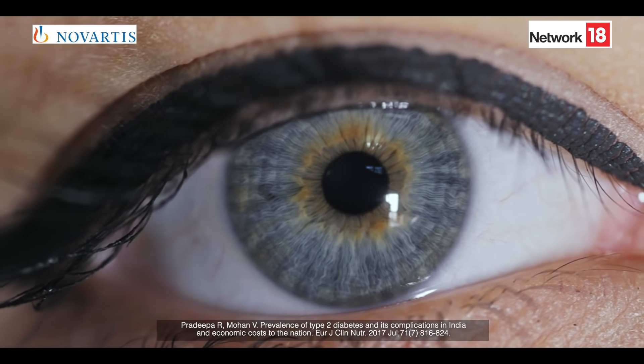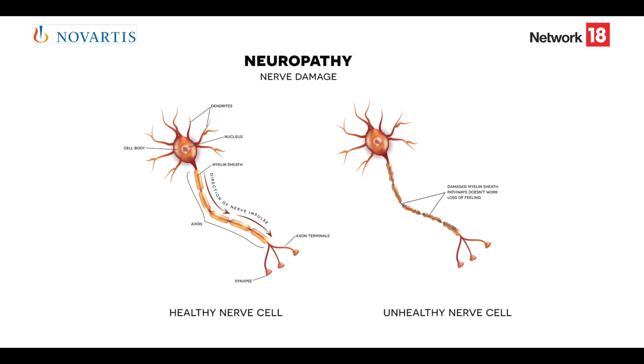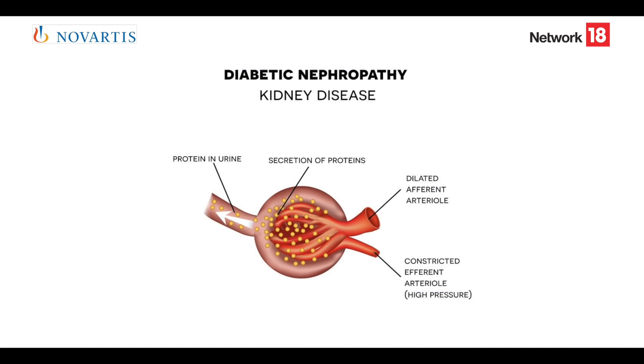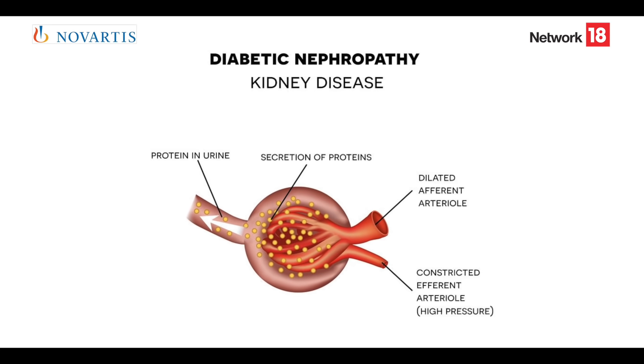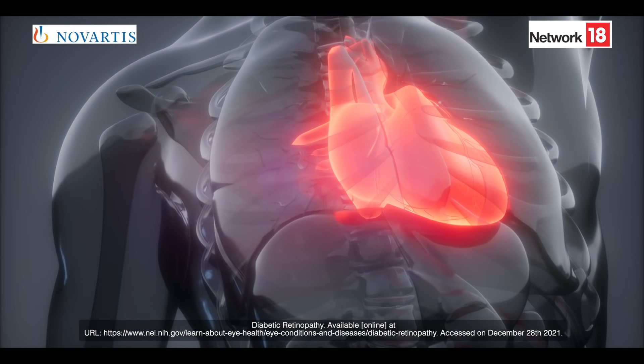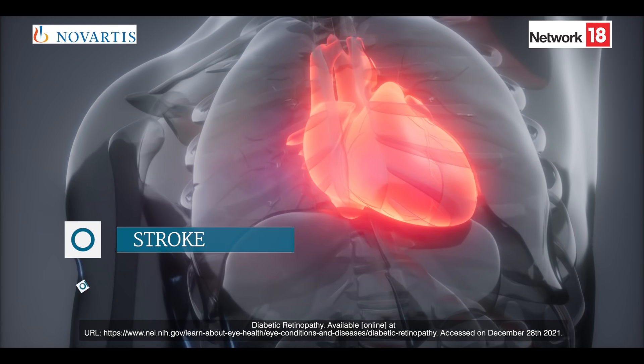While diabetic retinopathy is one of the important complications in diabetic patients, other complications are equally common, such as neuropathy — problems of the nerves — and nephropathy, which is kidney disease. Diabetic patients also face heart disease, with two-thirds of diabetic patients developing it, and may also suffer stroke or heart failure.